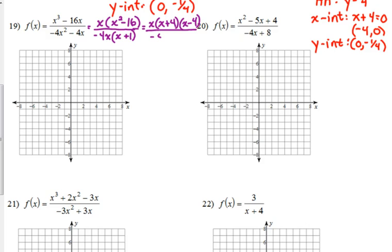So when we are analyzing to see if anything simplifies, the only thing that will simplify is the GCF of x. We can cancel those. So our simplified expression looks like this: x plus 4 times x minus 4 over negative 4 times x plus 1.